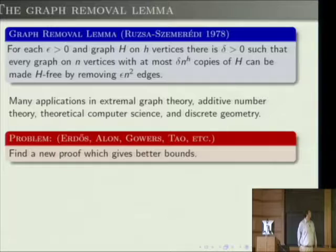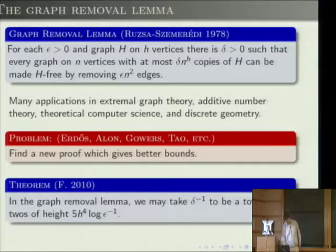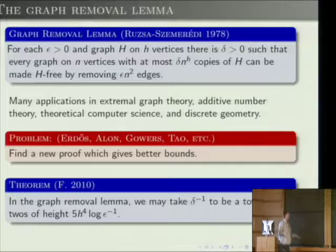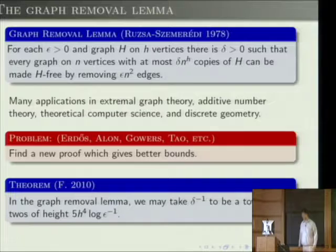I recently solved this problem. In the graph removal lemma, you can take delta-inverse to be a tower of twos of height only logarithmic in epsilon-inverse. The regularity proof gives a tower that's polynomial in epsilon-inverse, which is huge, but this shows that the regularity lemma is not necessary and that you can find a new proof giving better bounds.